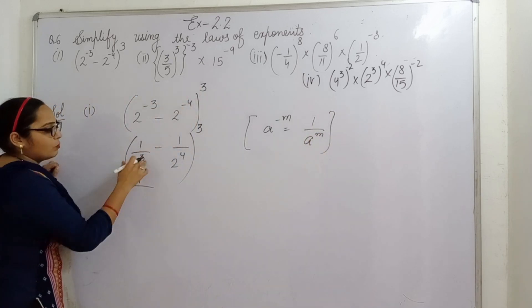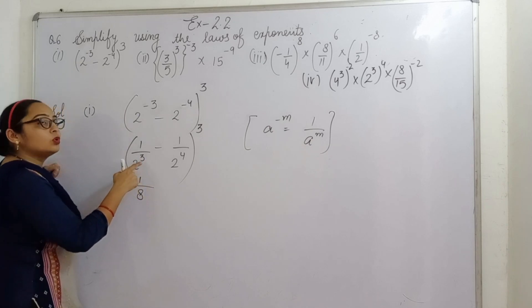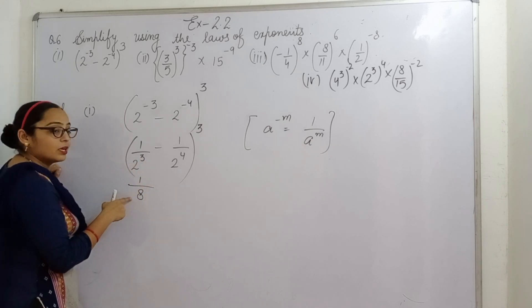Now this one I am writing directly here 8. 2 ko agar ap 3 times multiply karoge to kya aayega? 8.